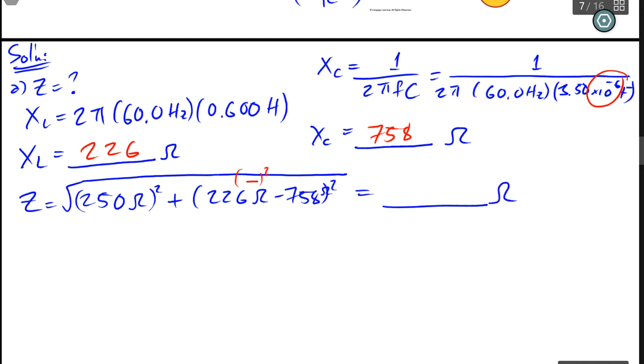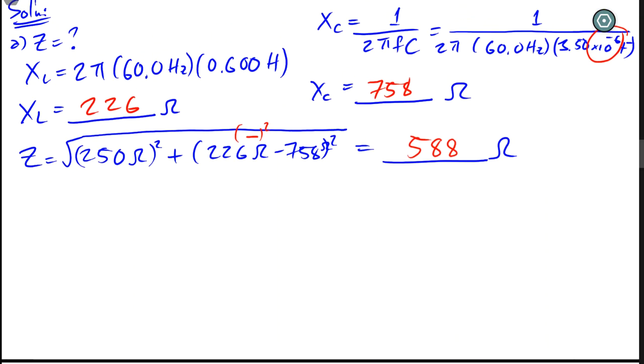And you end up with an impedance of the RLC circuit of 588 ohms. Let's use red. Let's be consistent. Boom. And then, let's see if we have enough room to solve for, now that we have that, from Ohm's Law.